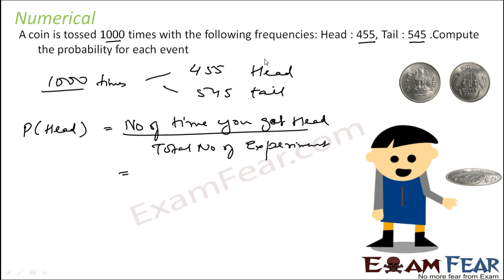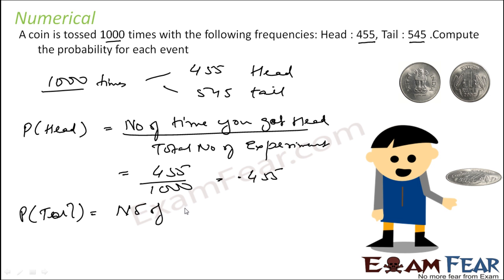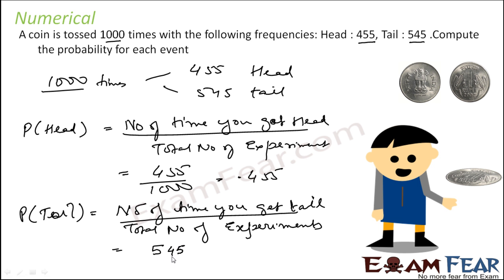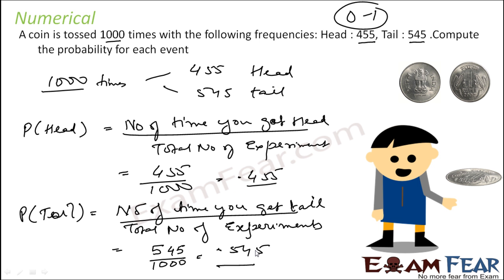Number of times you got head is 455, total number of experiments is 1000, and it is nothing but 0.455. Similarly, the probability of tail is number of times you got tail by total number of experiments — number of times you got tail is 545, total number of experiments is 1000, so we get 0.545. Note that both these values are between 0 and 1.